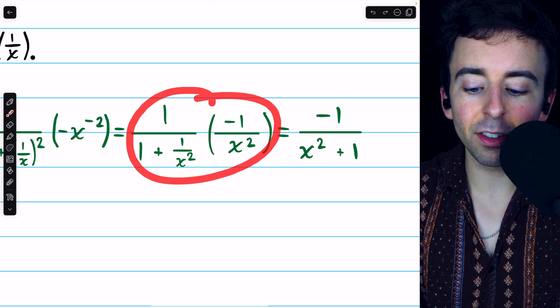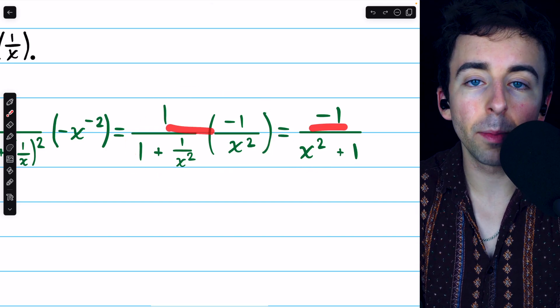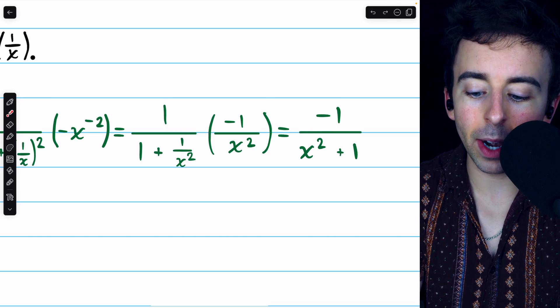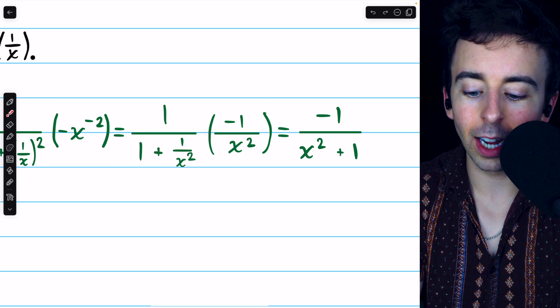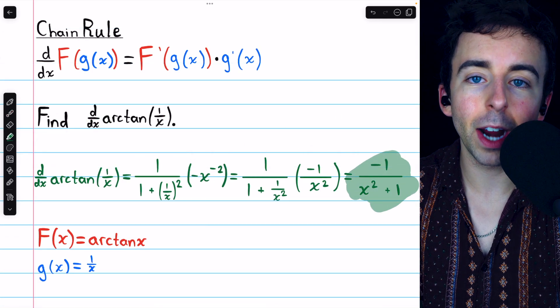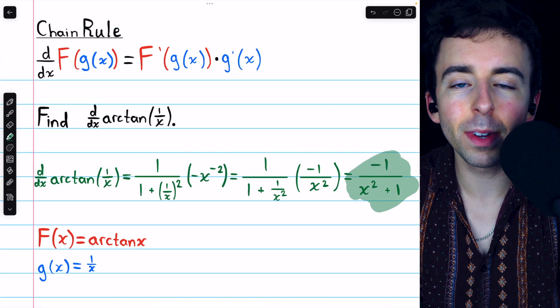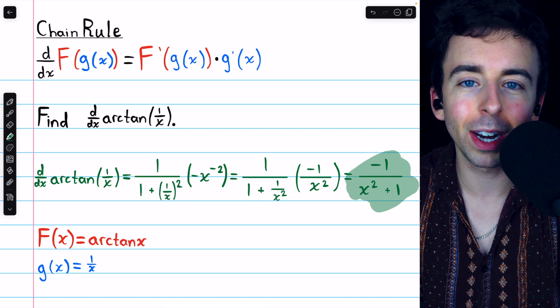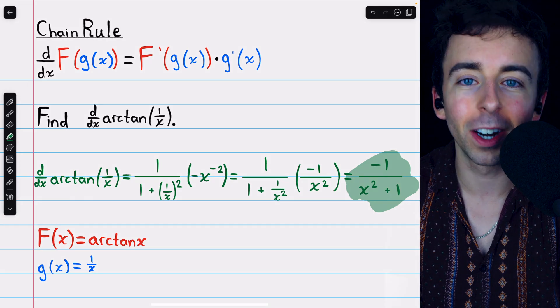That comes from multiplying these two things together, so the numerator becomes negative 1, and in the denominator, you get x squared plus 1. That's the derivative of arctan of 1 over x. Let me know in the comments if you have any questions, and be sure to check out my calculus 1 course and calculus 1 exercises playlist in the description for more. Thanks for watching.